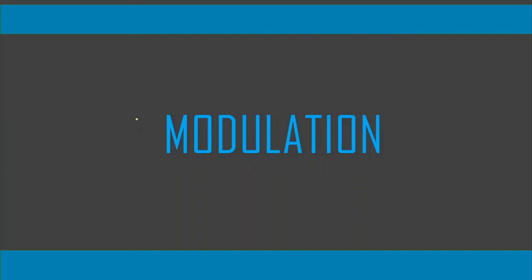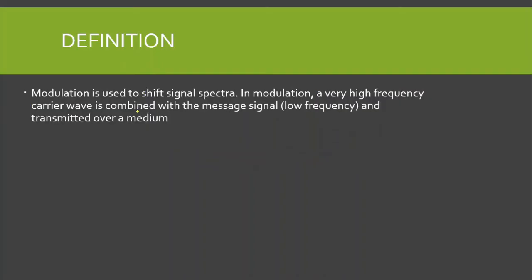In this lecture we are going to talk about modulation. Modulation is basically used to shift the signal spectra. In modulation, a very high frequency carrier wave is combined with the message signal, which is a low frequency signal, and transmitted over a medium. We call this message signal a baseband signal or a modulating signal.